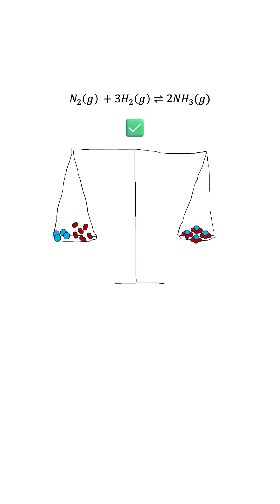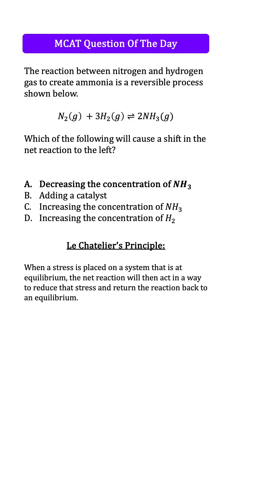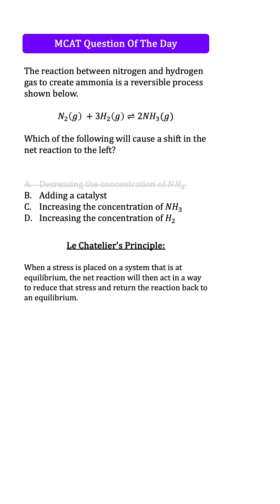It's important to remember that the reaction is happening constantly in both directions, but at rates that maintain a ratio of reactants to products. For A, decreasing the concentration of NH3 — if we decrease this, we should expect the forward reaction to produce more NH3 to rebalance the equilibrium, which means the net reaction will proceed to the right. A is not the answer.